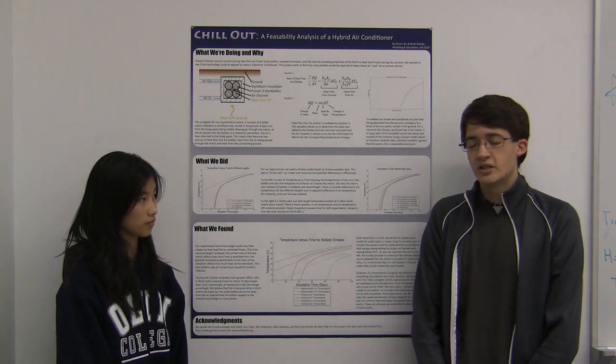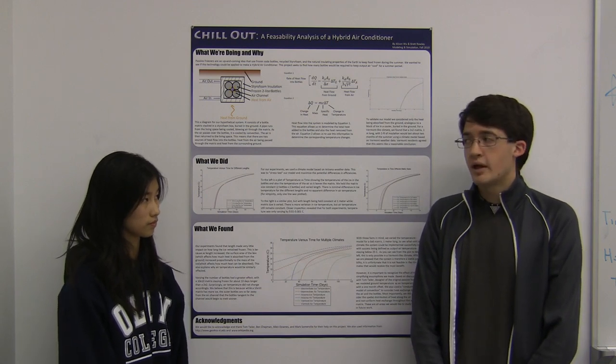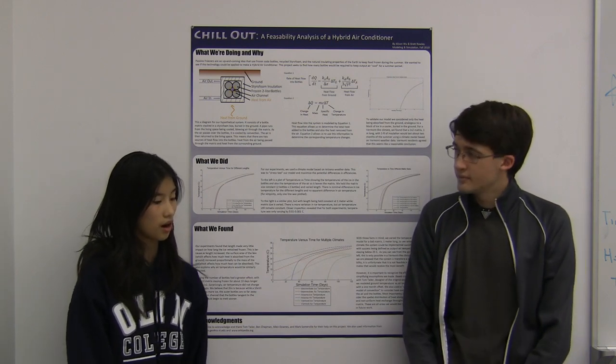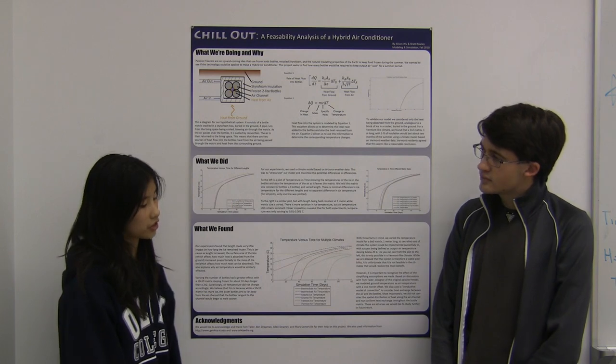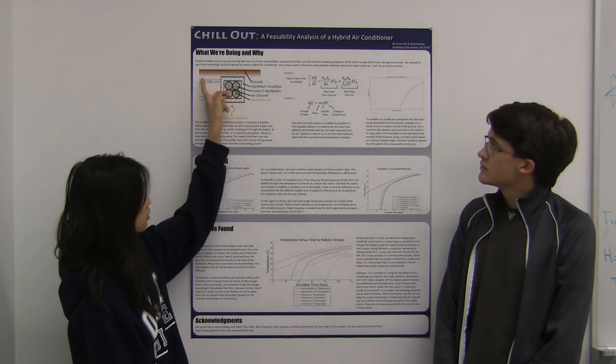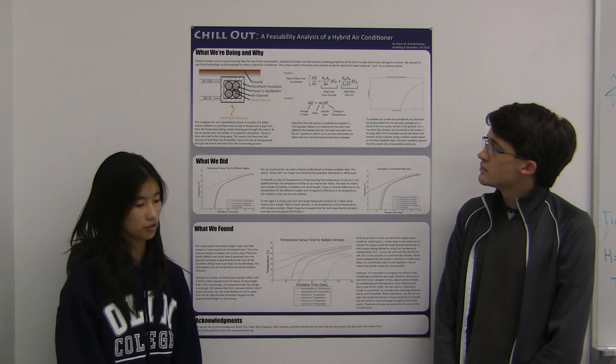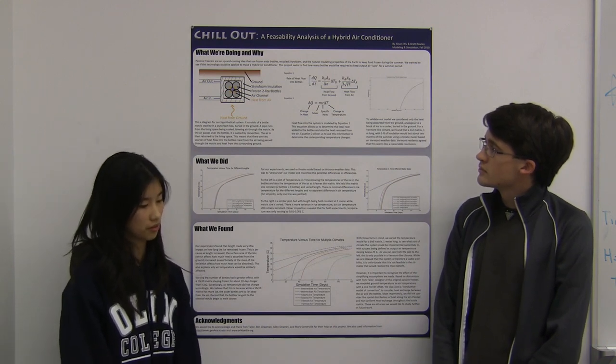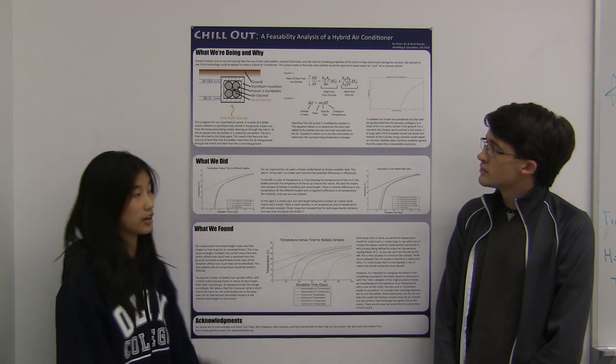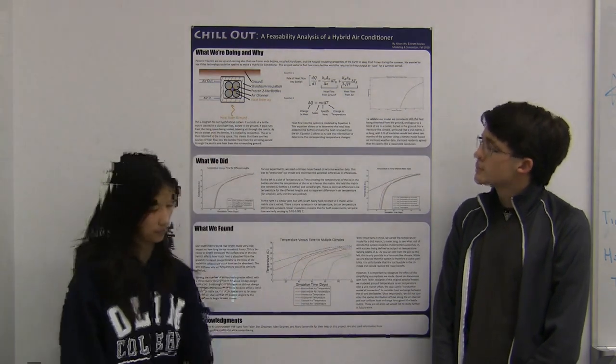We wanted to see if this technology and its benefits could be applied to make a hybrid air conditioner. Our air conditioner would use power to circulate air through a matrix of 2-liter frozen soda bottles, but the air would be cooled by natural heat exchange with the matrix. The system is buried in the ground and insulated by one foot of styrofoam.